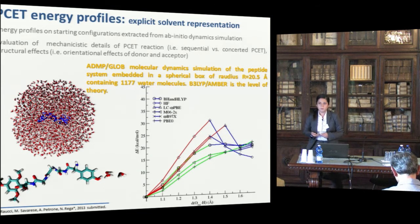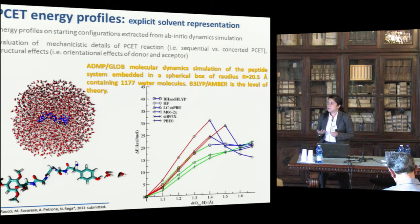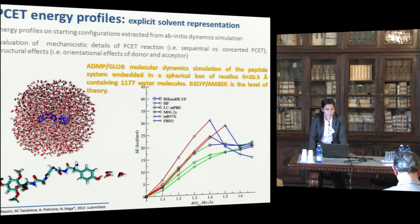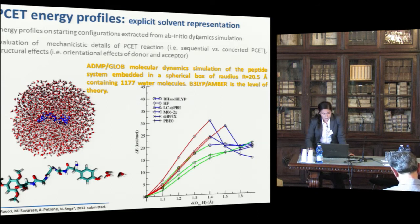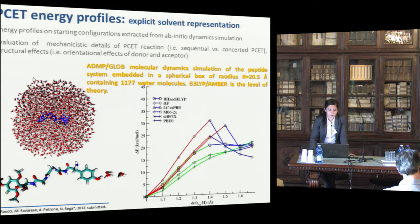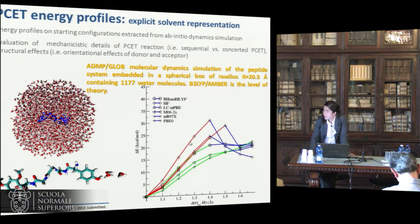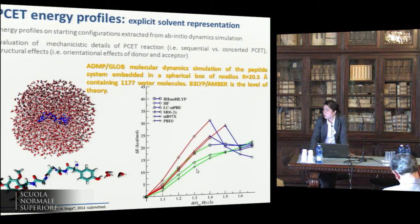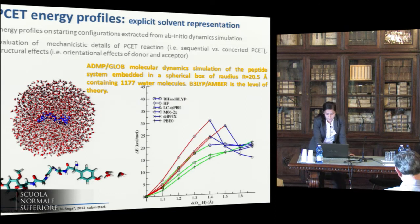If we want to mimic the presence of the solvent, we can do it by representing the water molecules in an explicit way. We performed an ab initio molecular dynamics simulation with a spherical box of about 1180 water molecules. We took some snapshots of this dynamics as initial configurations and constructed the energetic profile shown here. Again, we can observe that the RS3-PBE curves correctly represent both the proton and the electron transfer, while some functionals seem to be unable to localize the unpaired electron.